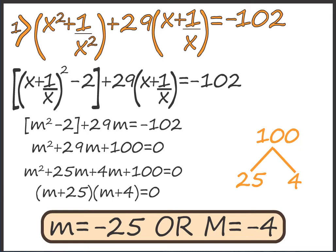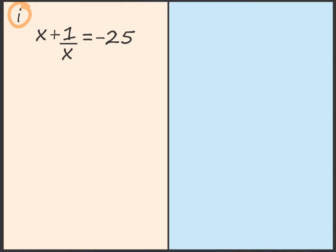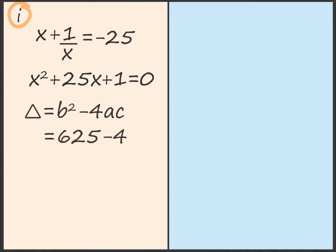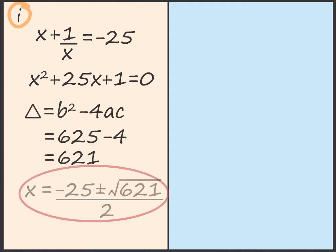The sum is not yet over. We re-substitute x plus 1 by x equals m. Equation 1: x plus 1 by x equals minus 25, so x squared plus 25x plus 1 equals 0. Using the discriminant, delta equals b squared minus 4ac gives delta equals 621. Therefore x equals minus 25 plus or minus root of 621, upon 2.